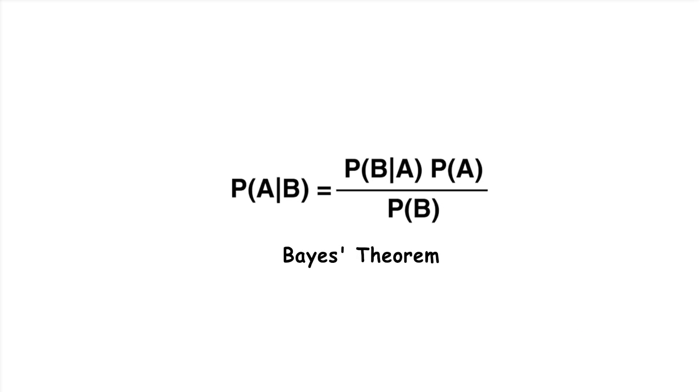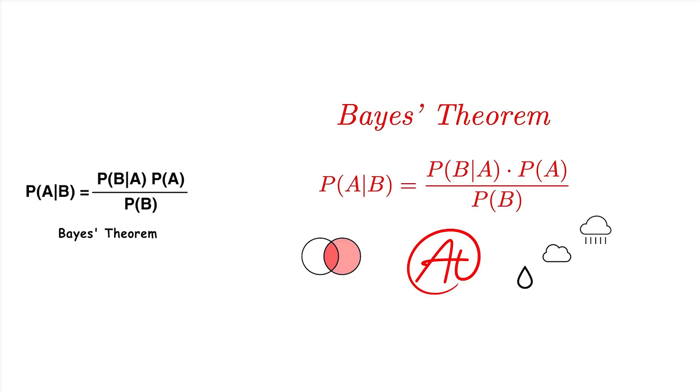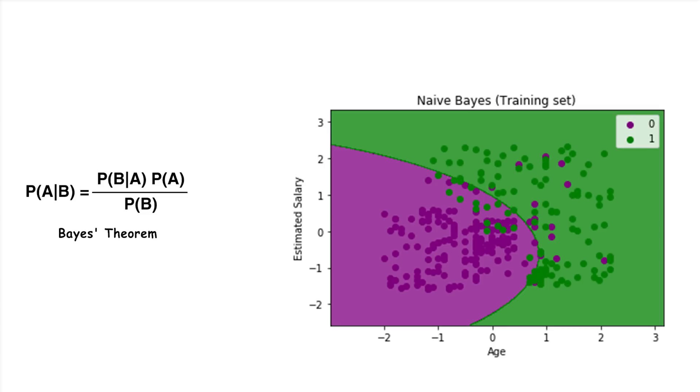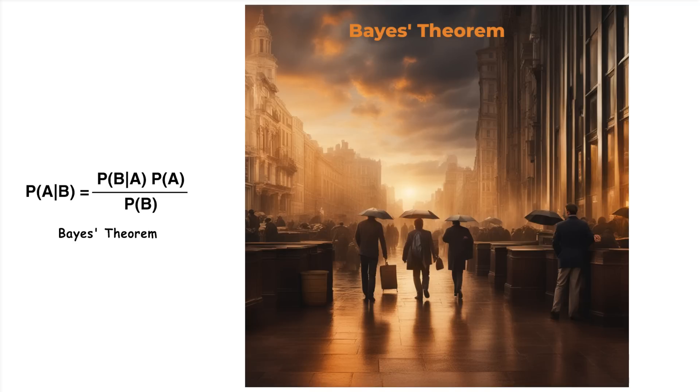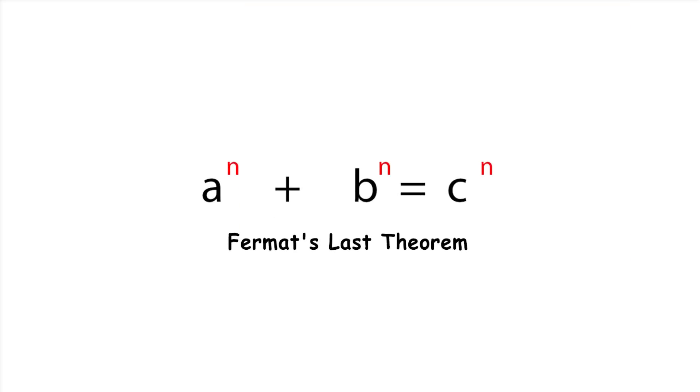Bayes' theorem. Bayes' theorem is a way to find the probability of an event based on prior knowledge of conditions related to the event. In simple terms, it helps us update our predictions or beliefs about the likelihood of an event happening, given new evidence. For example, if you know the probability of it raining and the probability of you carrying an umbrella, Bayes' theorem helps calculate the probability of it raining given that you carried an umbrella.